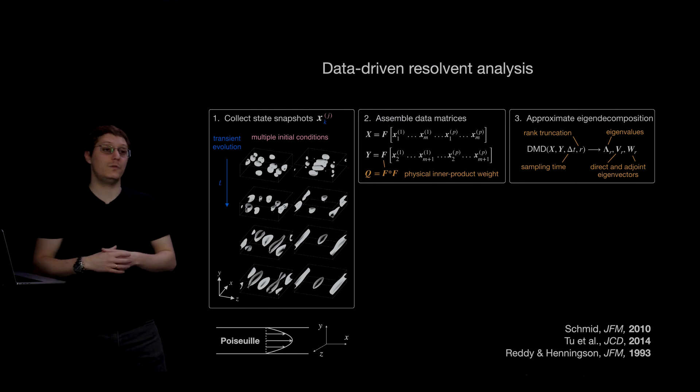Now that we have these matrices, we use dynamic mode decomposition to approximate the leading eigenvectors and eigenvalues of the underlying linear operator that evolves our measurements.